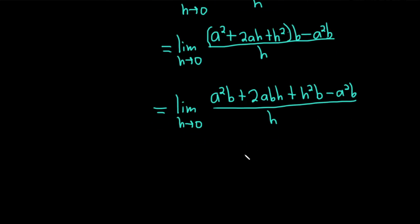Oh, this is really nice. We get some cancellation here. And you can factor out an h here. So this is equal to the limit as h approaches 0, we can pull out that h. So we're left with 2ab plus and we're left with hb because we're pulling out one copy of h. So we still have one left all over h.